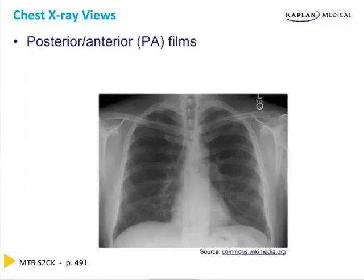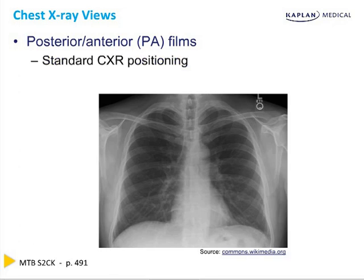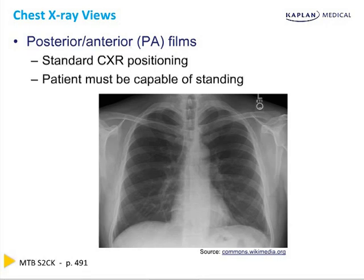Let's start evaluating chest X-rays by looking at some normal examples. Seen here is a normal posterior to anterior chest film. This is the standard chest X-ray positioning, and it helps to minimize the ionizing radiation dose absorbed by the tissues most sensitive to radiation, specifically breast and thyroid tissue, by shooting the X-ray beam from the back and having the cassette positioned anteriorly. This view provides the best visualization of the lung fields, heart borders, and the diaphragm. Unfortunately, it requires a patient to be mobile, because the source of the X-ray beam must be placed behind the patient, and thus it is a poor option for bedridden patients.